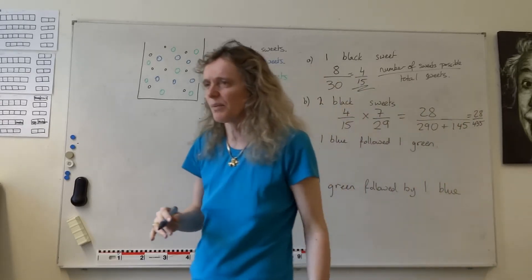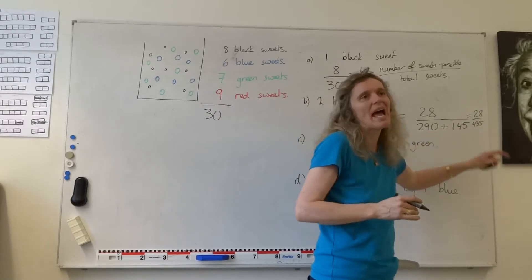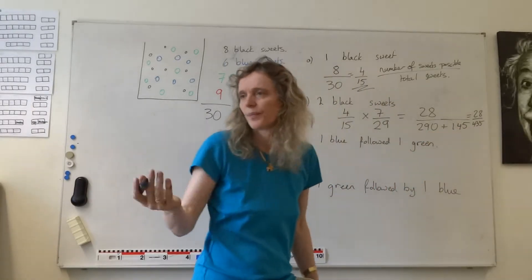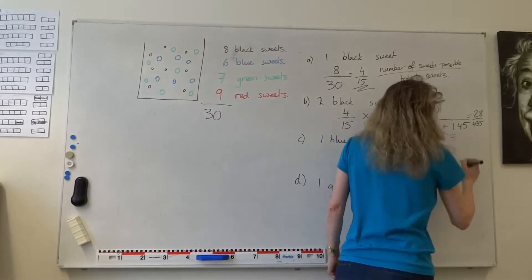I'd probably put that to a decimal instead. So I'd use my calculator and answer that probability as a decimal. What answer do you get then? 28 four hundred and thirty-fifths.